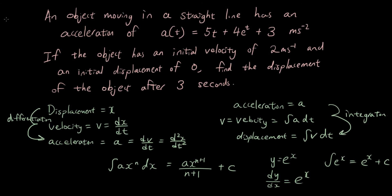So let's go to the actual question. An object is moving in a straight line and has an acceleration of a(t) = 5t + 4e to the power of t + 3 meters per second squared. If the object has an initial velocity of 2 meters per second and an initial displacement of 0, find the displacement of the object after 3 seconds. This means we have the acceleration equation and we want to find the displacement equation.